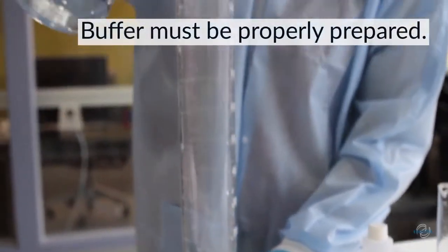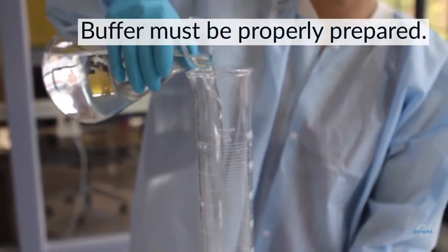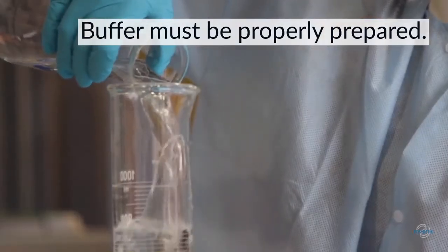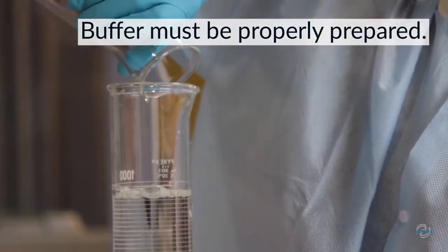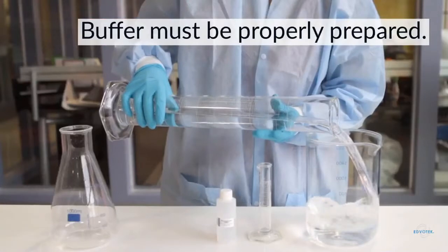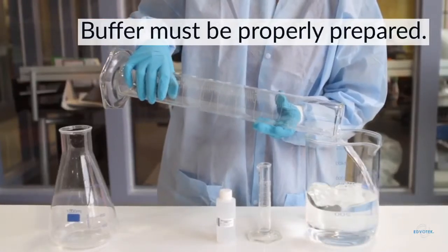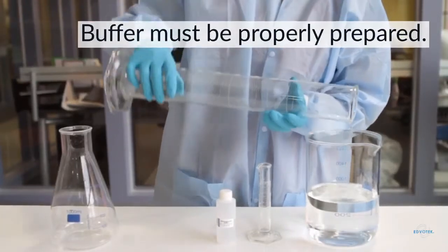One step that's easy to overlook is the preparation of the electrophoresis buffer. The buffer does need to be diluted to the 1x concentration plus it is clear and colorless just like water. So it would be easy to accidentally use water instead of buffer. But what is the buffer and why is it important for electrophoresis?